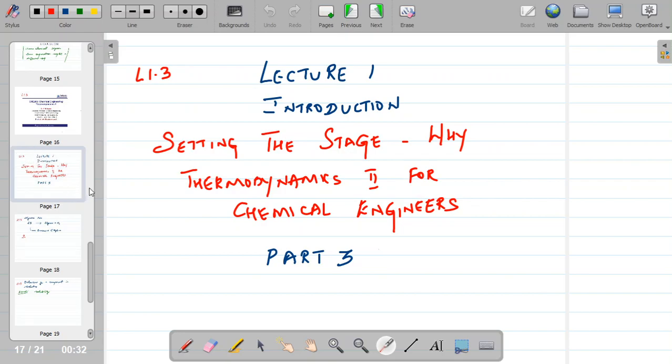For the last two lectures we have seen what is the role of chemical engineers in the larger context of society and we also saw some of the information a chemical engineer would require to build a plant or start thinking of process development. In this concluding part, lecture three, we will set the tone of where thermodynamics is required in terms of this larger aspect of chemical engineering. We have already seen some examples in the second lecture.